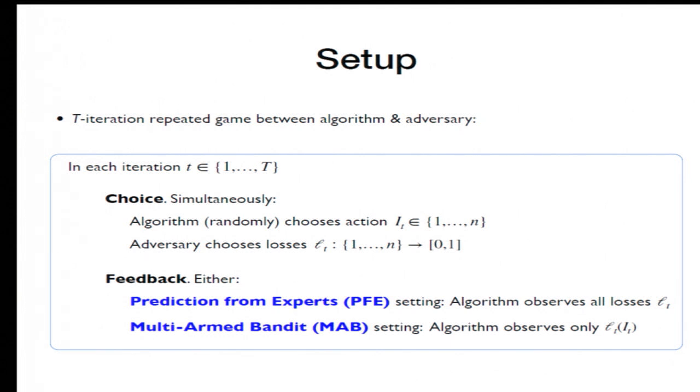So this is a repeated game between an algorithm and an adversary. In each iteration, the algorithm chooses one out of n possible actions, and the adversary chooses losses in all the actions. The algorithm then incurs the regret for the action it took. Afterwards, it receives some feedback with which it can make better decisions in the future.